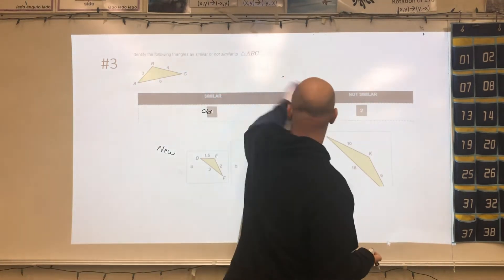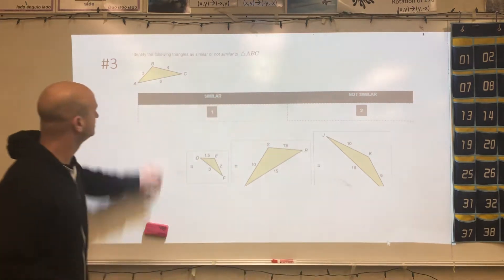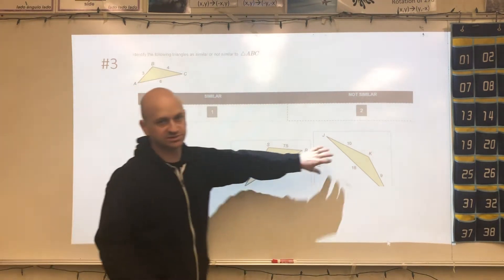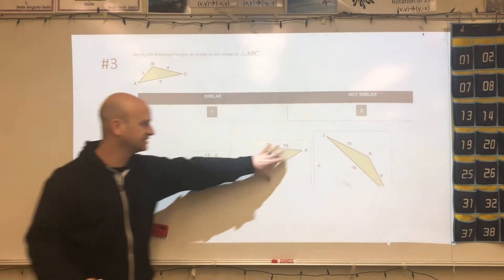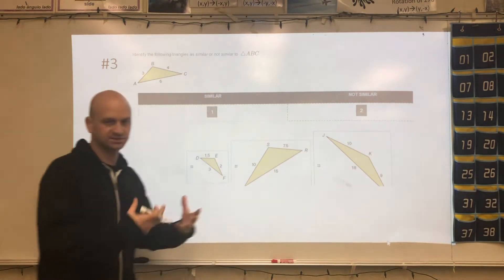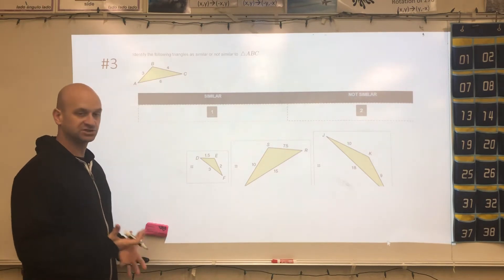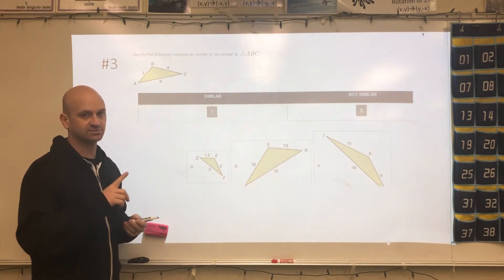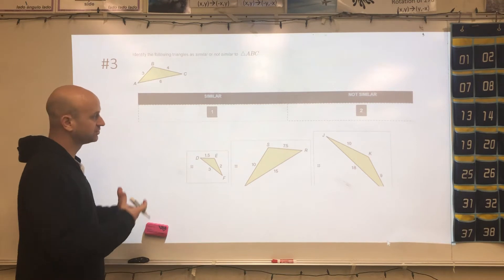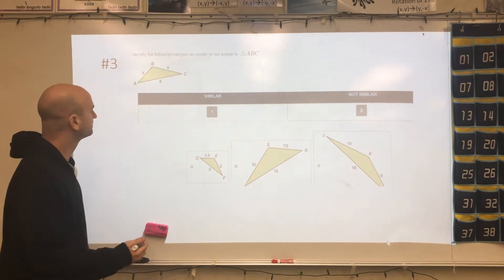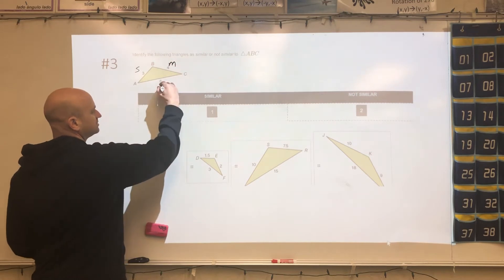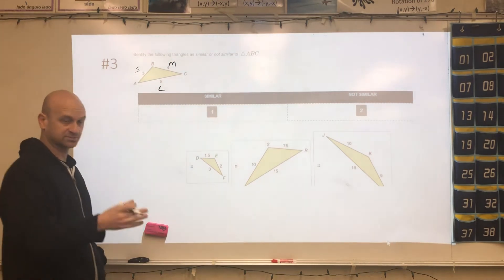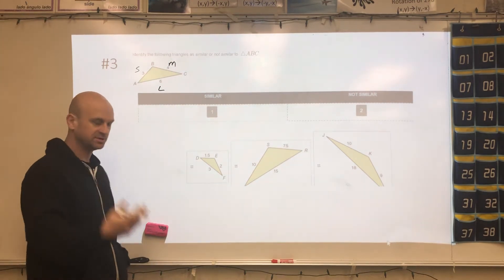All right, next problem. They gave you a triangle ABC, and they wanted you to determine which of these are similar. Now, because they give you all three sides in each of these, you had to determine the proportions are the same for each of the three sides. If one side was not proportional, then you know that the triangles are not similar. In this case, I'm going to call this small, medium, and large, and then I'm going to match up the small with the small, the medium and medium, and large with large.